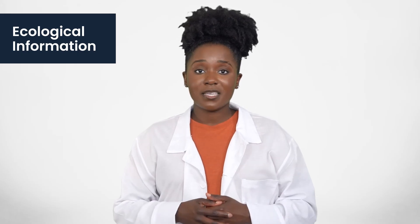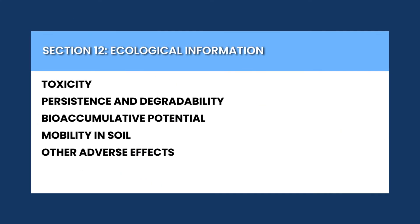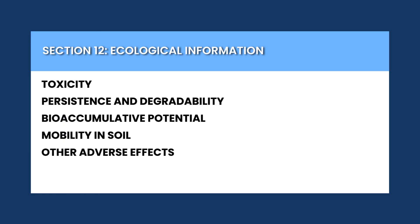Section 12 of the SDS provides information on the ecological impacts of the chemical if released into the environment. This includes how the chemical may affect the environment and any potential risk to local air, water, or soil. The section also lists precautions that should be taken to prevent environmental damage or pollution, such as proper disposal methods and any regulations that apply.